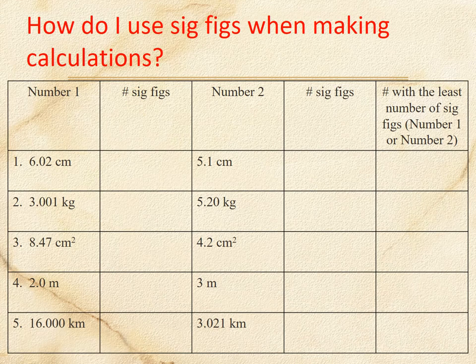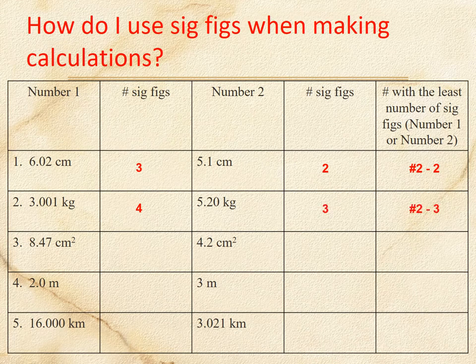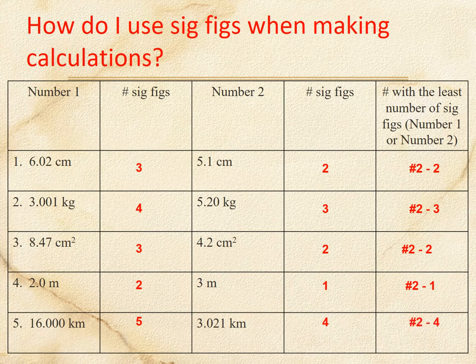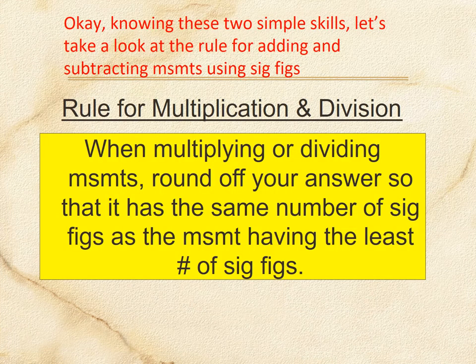For multiplying and dividing, find the least number of sig figs — that determines your answer's precision. Problem one: three sig figs times two sig figs, so your answer can only have two sig figs. Problem two: four sig figs times three sig figs — answer in three sig figs. Problem three: three sig figs times two sig figs — answer in two sig figs. Problem four: two sig figs times one sig fig — answer in one sig fig. 16.000 is five sig figs and 3.021 is four, so the answer can only be four sig figs.